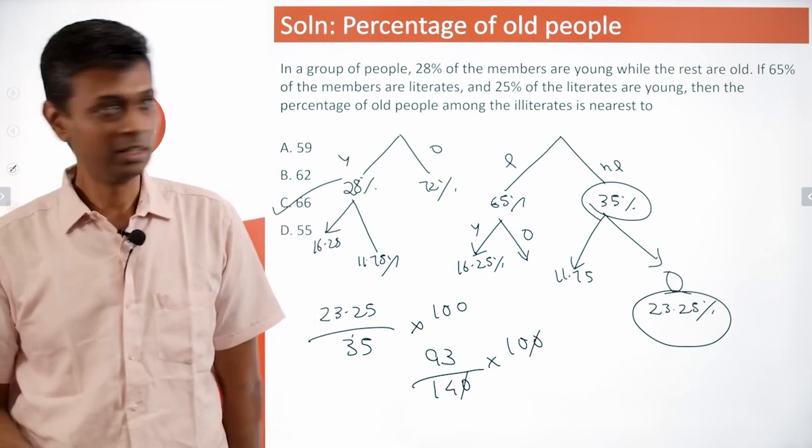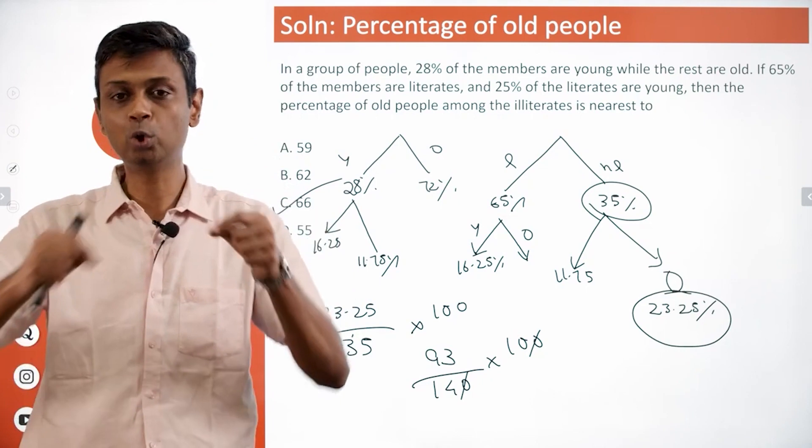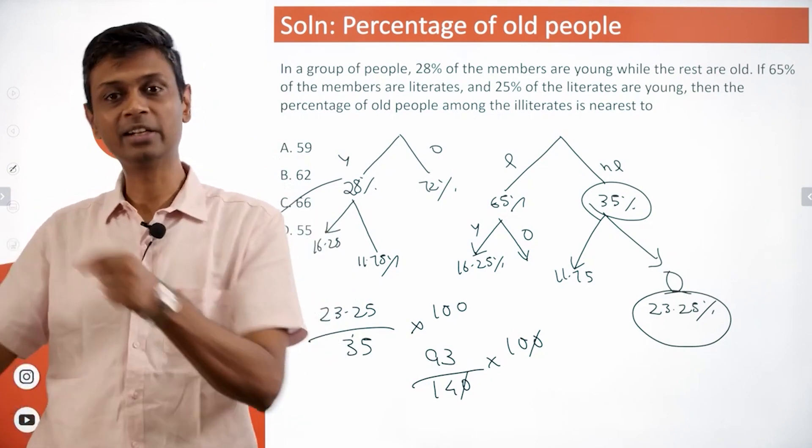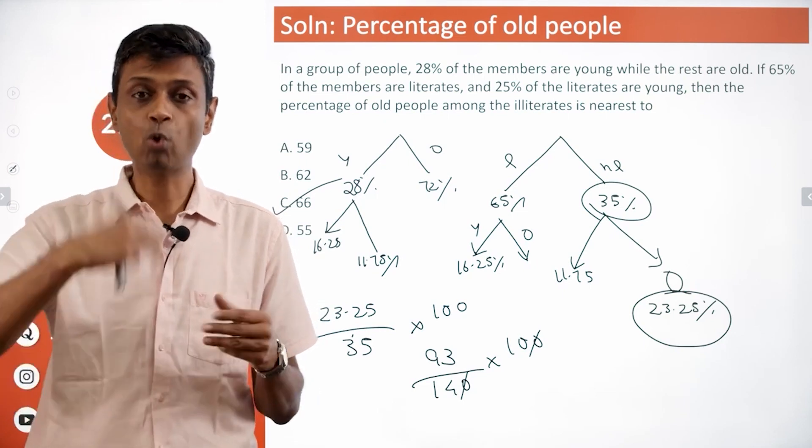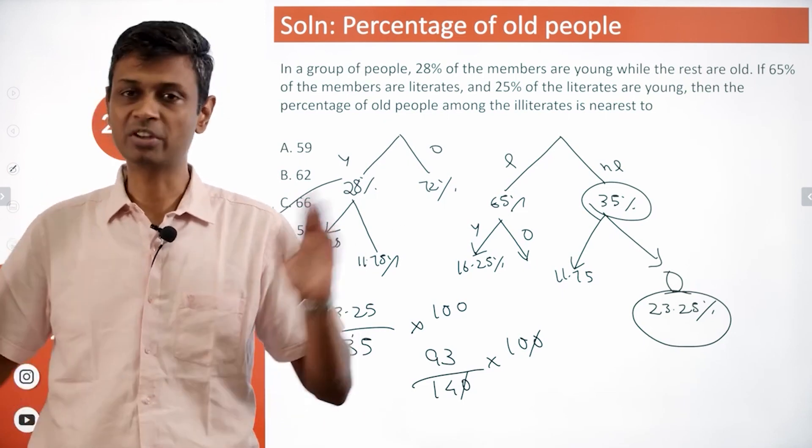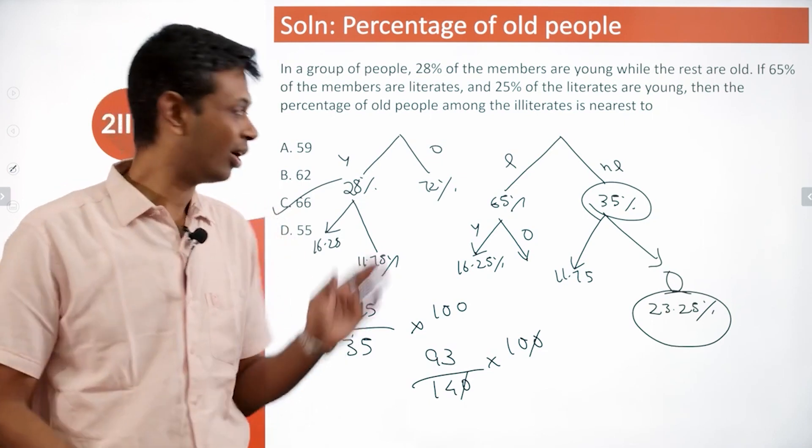This is a standard question - the same data set broken in two ways: young and old, literate and illiterate. If you're given what percentage of literates are young or what percentage of old people are illiterate, you can fill pretty much everything else. This is a standard template you should have plenty of practice in.